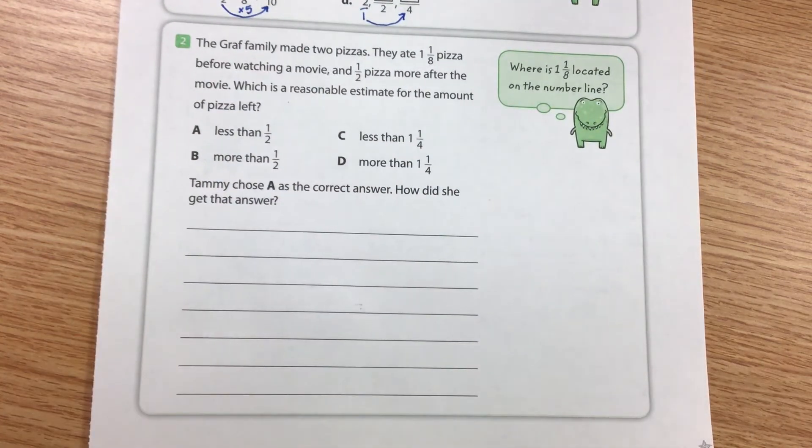Problem number two says the Graf family made two pizzas. They ate one and one-eighth pizza before watching a movie and one-half pizza more after the movie. Which is a reasonable estimate for the amount of pizza left?